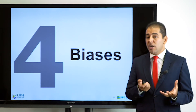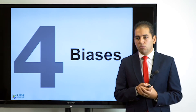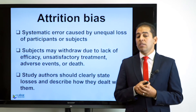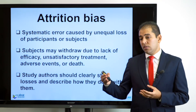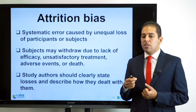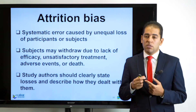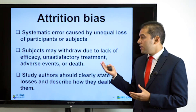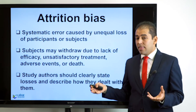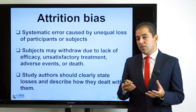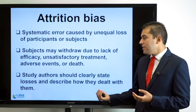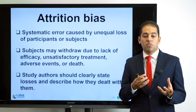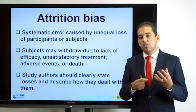Moving to biases — what types should we avoid when randomizing experiments? First is attrition bias: a systematic error caused by unequal loss of participants or subjects over the course of the experiment. Especially in long-term experiments, participants may withdraw due to lack of efficacy, unsatisfactory treatment, adverse events, or death if they are human beings, or expire if they are objects or materials. Study authors should clearly state losses and describe how they were handled. If not reported, this constitutes attrition bias.